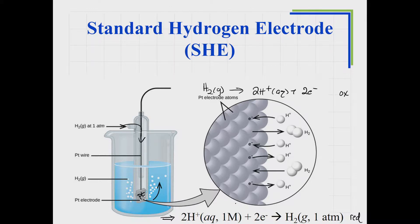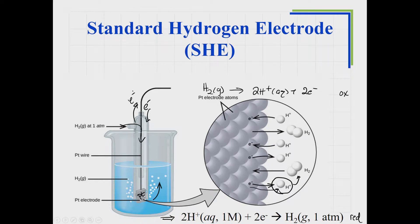If electrons are flowing into the electrode, the half reaction has electrons being added to hydrogen ions, turning into hydrogen gas. If electrons are leaving, hydrogen is losing its electrons, turning into hydrogen ions, and electrons flow out. Either way, for this hydrogen electrode, we arbitrarily set the value for this half cell at zero volts.